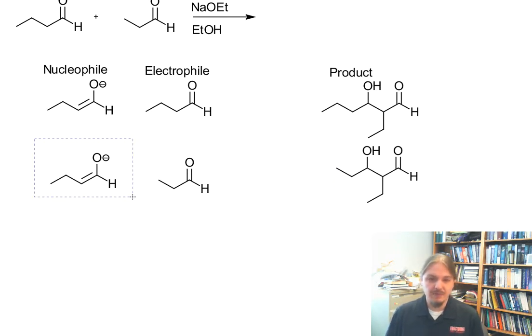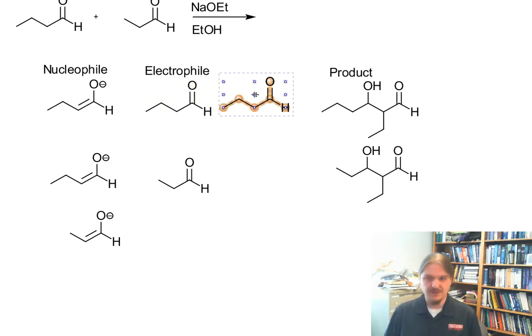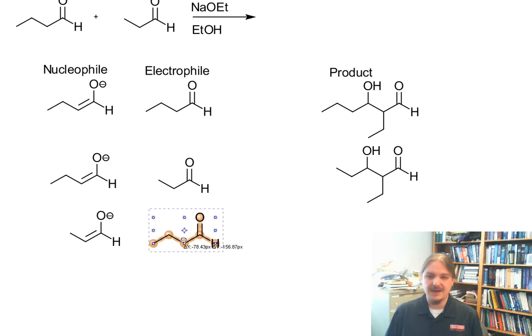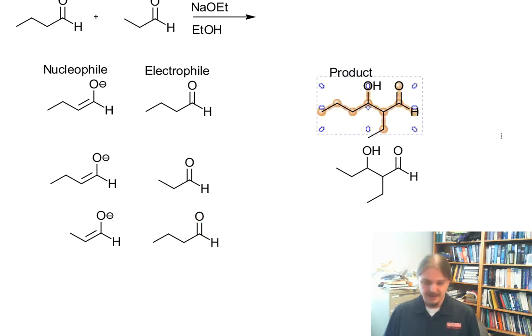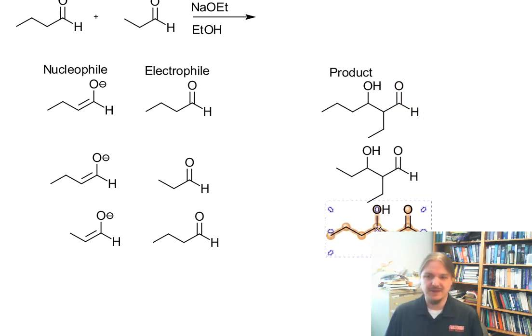We could switch. So we could have propanol as the nucleophile and butanol as the electrophile. And then we'd get a third product at the end of the day.